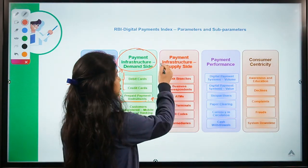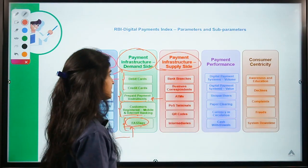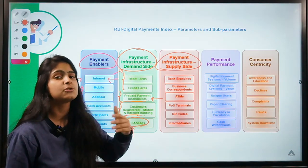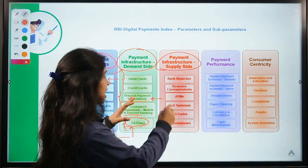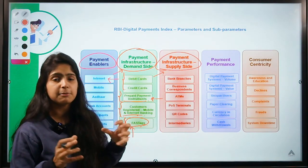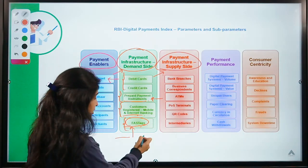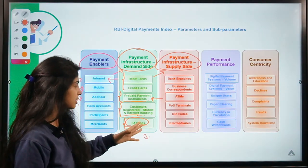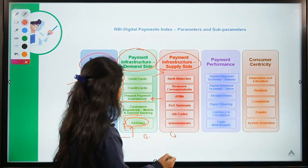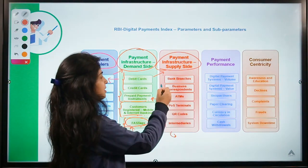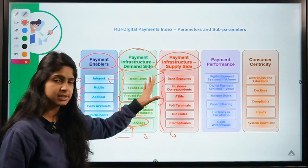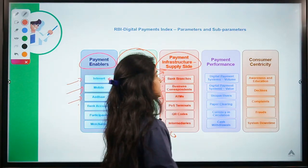Payment infrastructure — supply side. This was demand side, basically analysing how many consumers are wanting it. Now coming to supply side — how many suppliers are there providing these services? So these were service takers, and here are the service providers: how many bank branches are there, ATMs, POS terminals. These are supply side parameters.